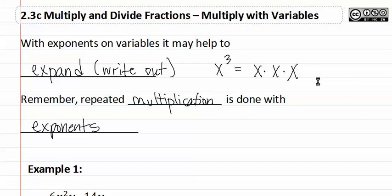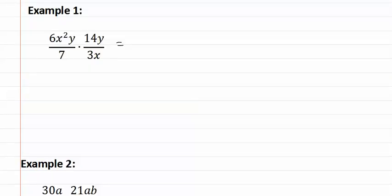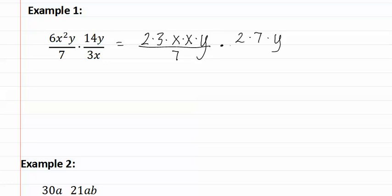Let's see this in example one. Let's expand out the numerators and denominators. We have two times three times x times x times y over seven, and we have two times seven times y over three times x. I have expanded out both the numbers and the variables.